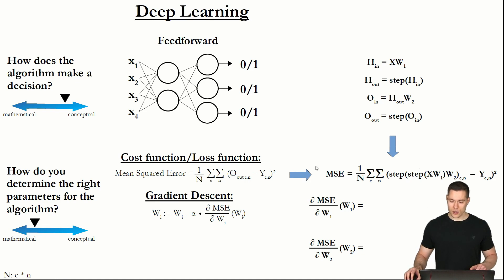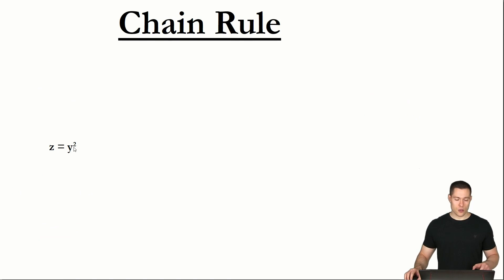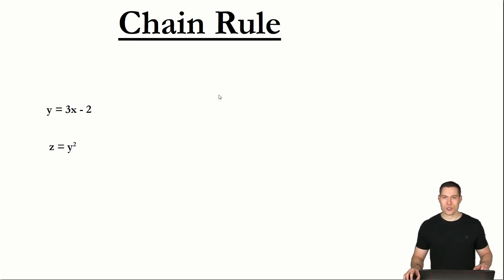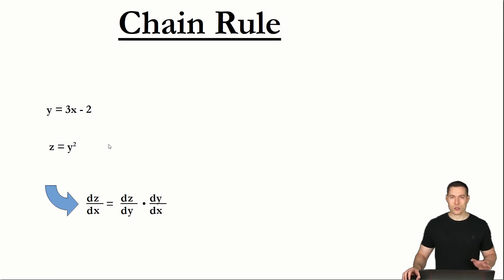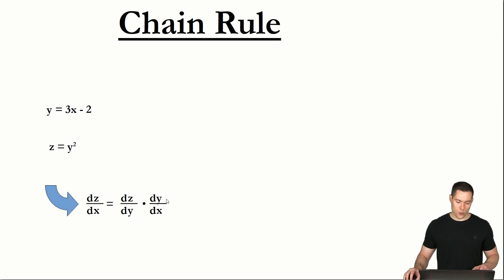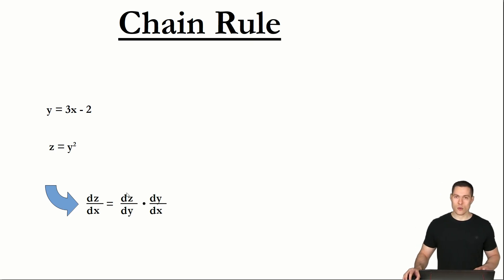Let's look at a simpler function than our mean squared error to explain that concept. So let's say z is a function of y, and y in turn is a function of x. The chain rule states that if you want to determine the derivative of z with respect to x, then you have to multiply the derivative of z with respect to y with the derivative of y with respect to x. We are using the regular derivative here because both functions only depend on one variable.